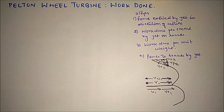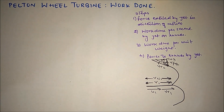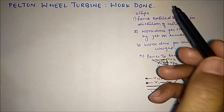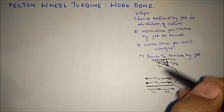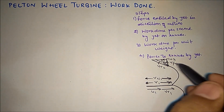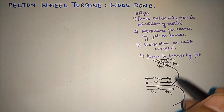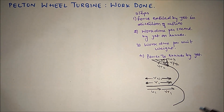Hello friends, welcome back to the channel. This is the third video on Pelton wheel turbine, in which we are going to derive the expression for the work done by the jet in the direction of motion on the blade. This is the velocity triangle for the Pelton wheel turbine which I have already discussed in my previous video — link in the description box below.